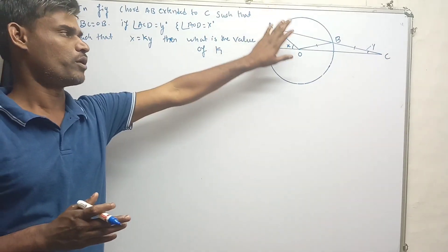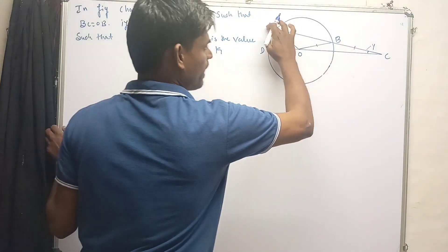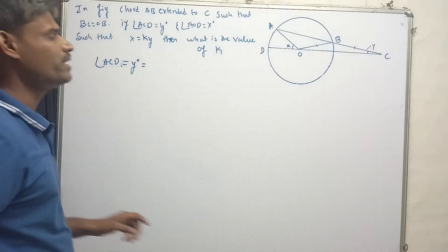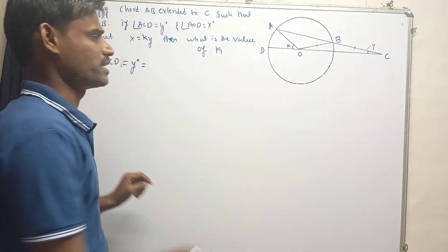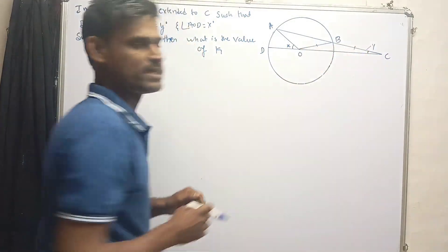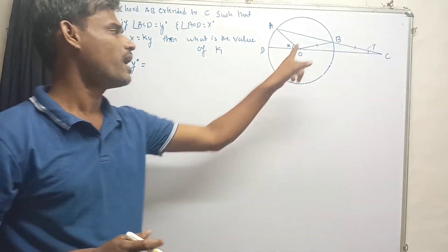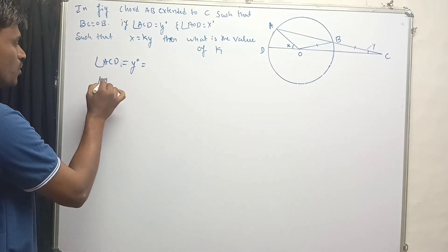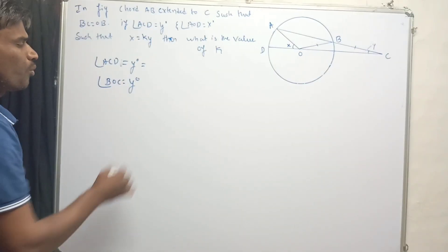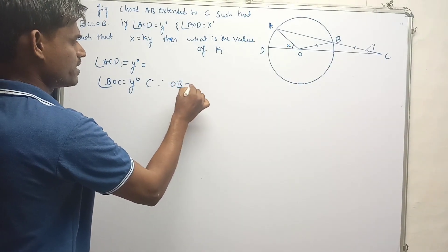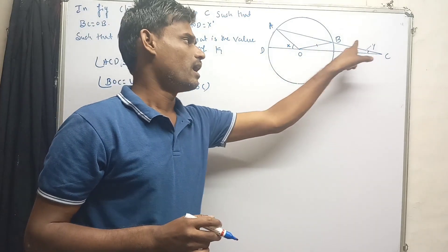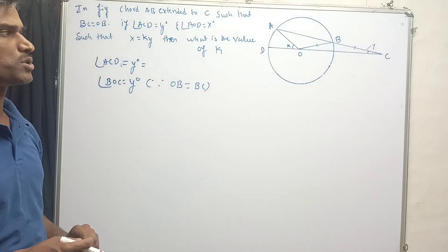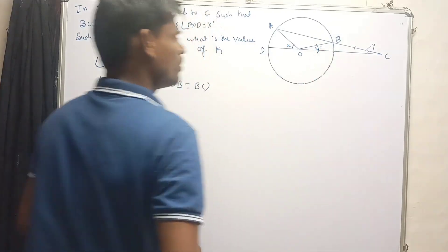Based on those properties we are going to solve this problem. It is given that angle ACD equals y degrees. It is also given that OB equals BC, meaning triangle BOC is an isosceles triangle. In any isosceles triangle, angles opposite to equal sides are equal, therefore angle BOC is also equal to y degrees.